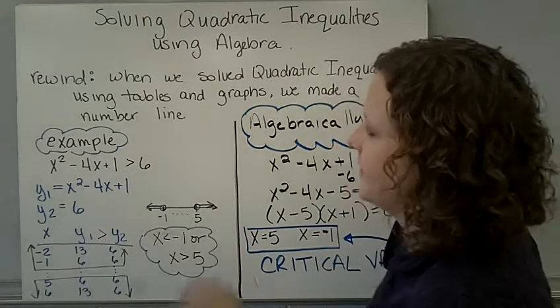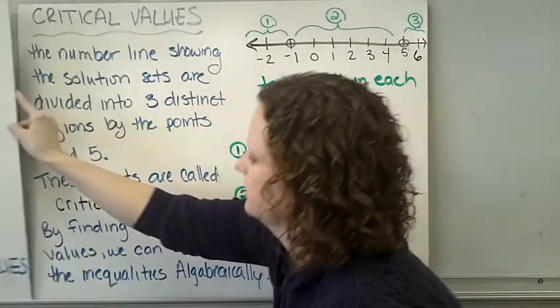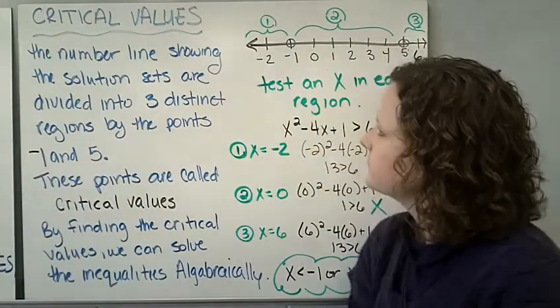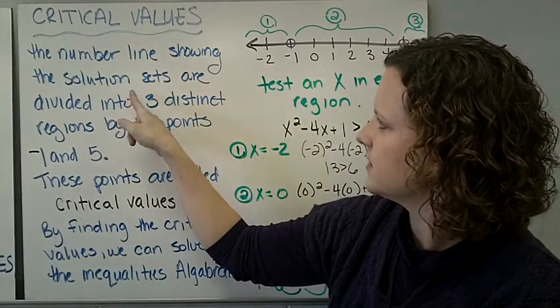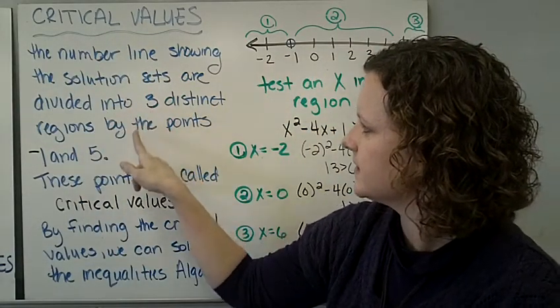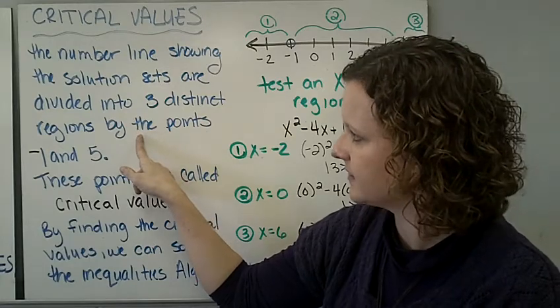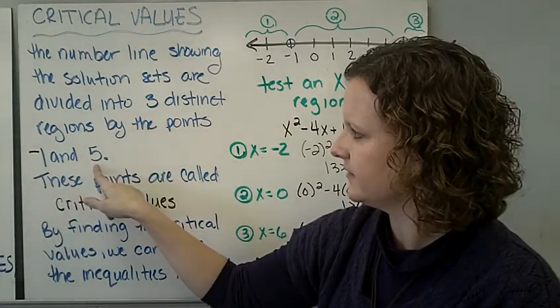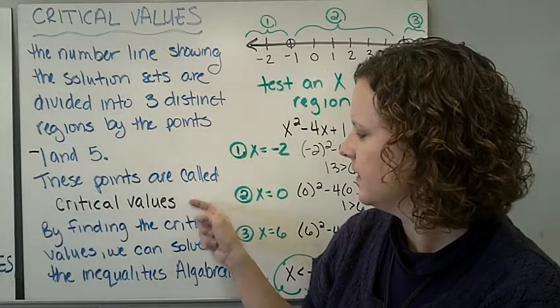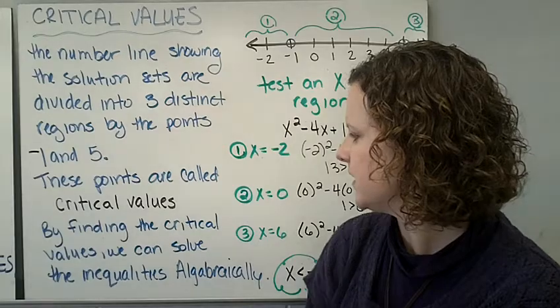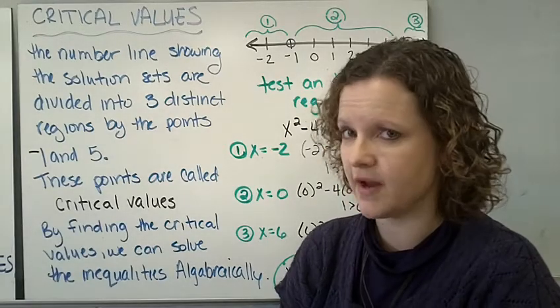Let's talk about critical values. The number lines showing the solution sets are divided into three distinct regions by the points negative 1 and 5. That's what we solved for. These points are called critical values. By finding the critical values, we can solve the inequalities algebraically.